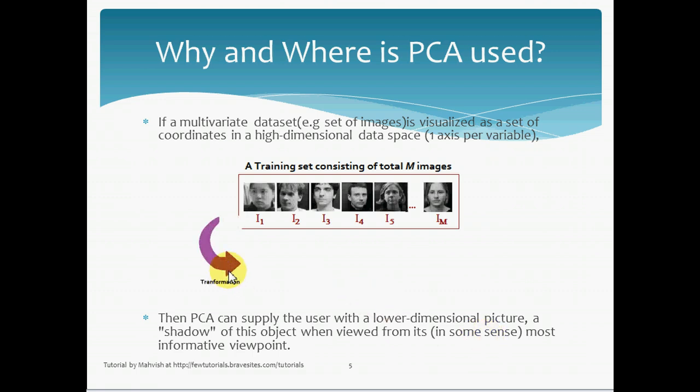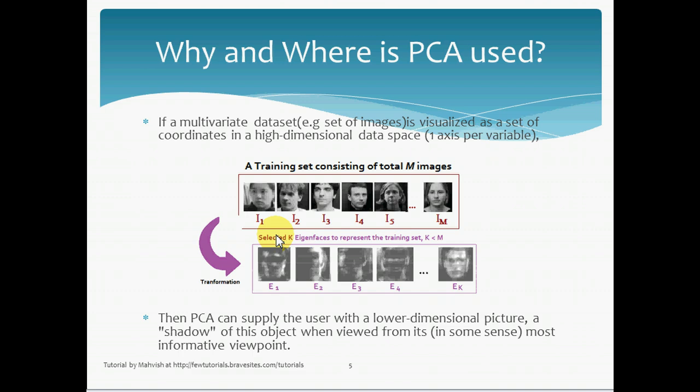When PCA transforms this training set of images, the database of images, it transforms it into a lower dimensional picture, which is something like this. Now, just beforehand, I'll tell you that these are the features. This data set has been split into features. This is a low dimensional picture of this data set.